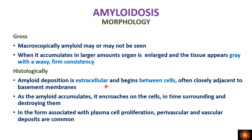As the deposition increases it encroaches on the cells, slowly causing pressure atrophy and destroying them. Specifically in amyloidosis associated with plasma cell proliferation, we have perivascular and vascular deposits of amyloid.